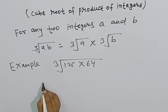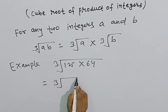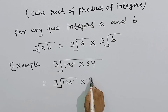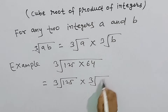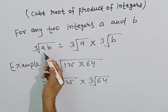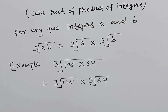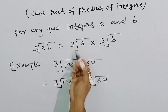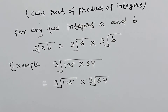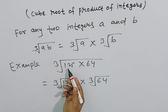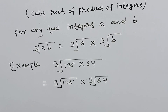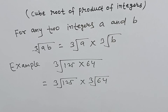चलिए हम इसे evaluate करते हैं। इसको आप लिख सकते हैं cube root of 125 into cube root of 64, क्योंकि हमने कहा कि किसी दो integers का product लेते हैं और उसका cube root निकालते हैं, तो उसका value cube root of a into cube root of b के बराबर होता है। तो इसी तरह हमने cube root of 125 into 64 लिया।